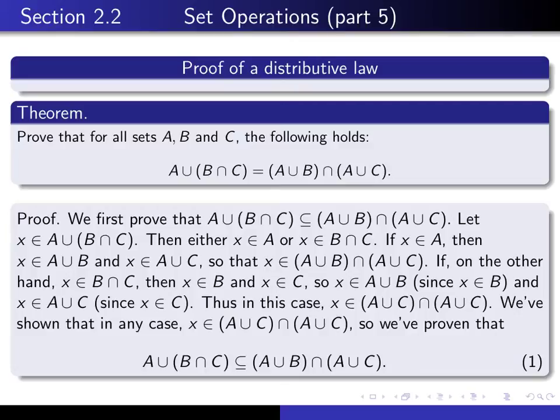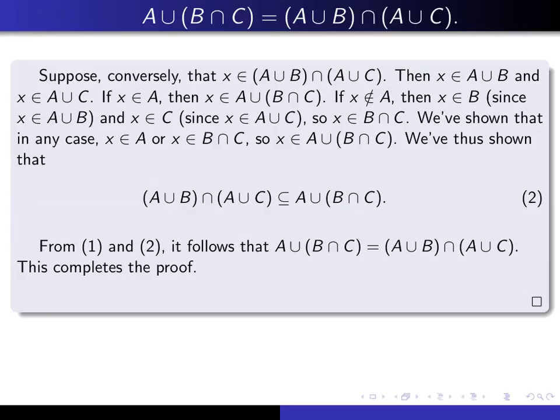Now we have to turn to the other half of the proof. We have to prove that this is a subset of this. So remember, we're trying to prove next that this thing is a subset of this thing. And so I should begin by giving myself an x in here and proving that it's in here. So I say, suppose, conversely, that x is an element of that right-hand set. Now what does it mean to say that? It's an and statement. So that means x is in here and x is in here.